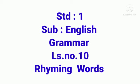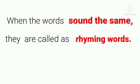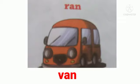Standard first subject: English grammar lesson number 10 — rhyming words. When words sound the same, they are called rhyming words. For example, children, look at this picture. In this picture, the top word given is 'ran.' You have to see the picture and make a rhyming word. So 'ran' — the picture is 'van.' Ran, van.